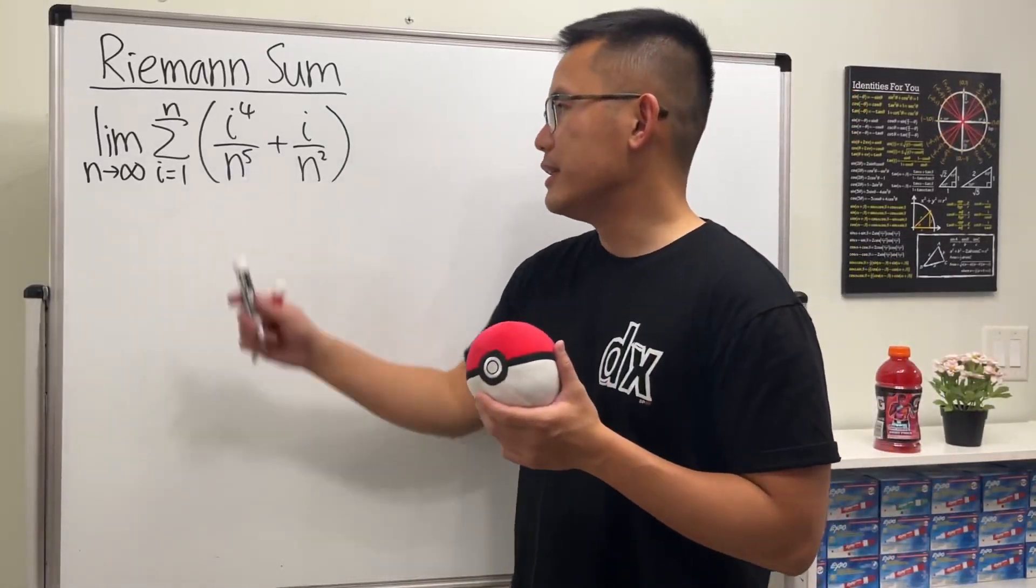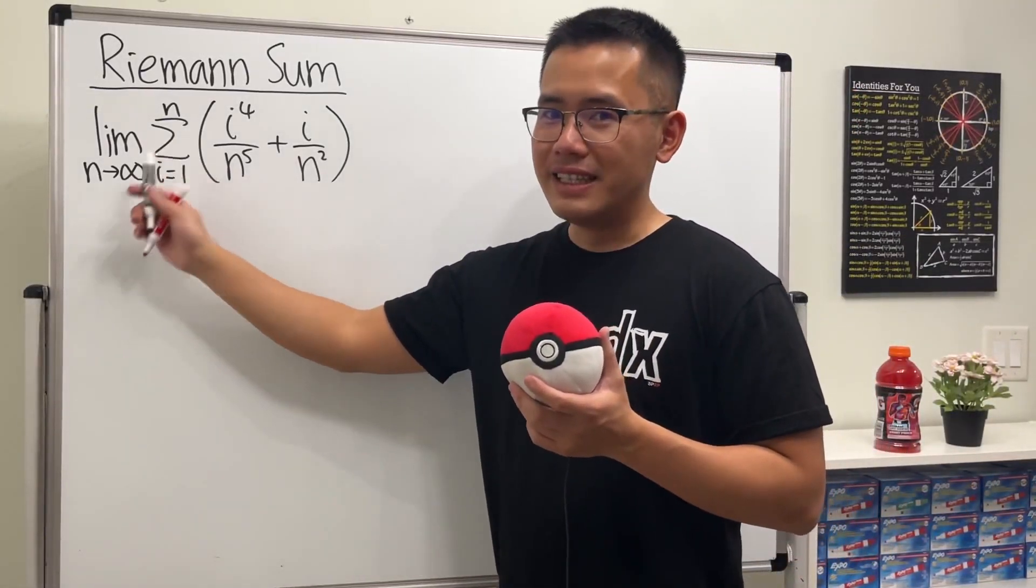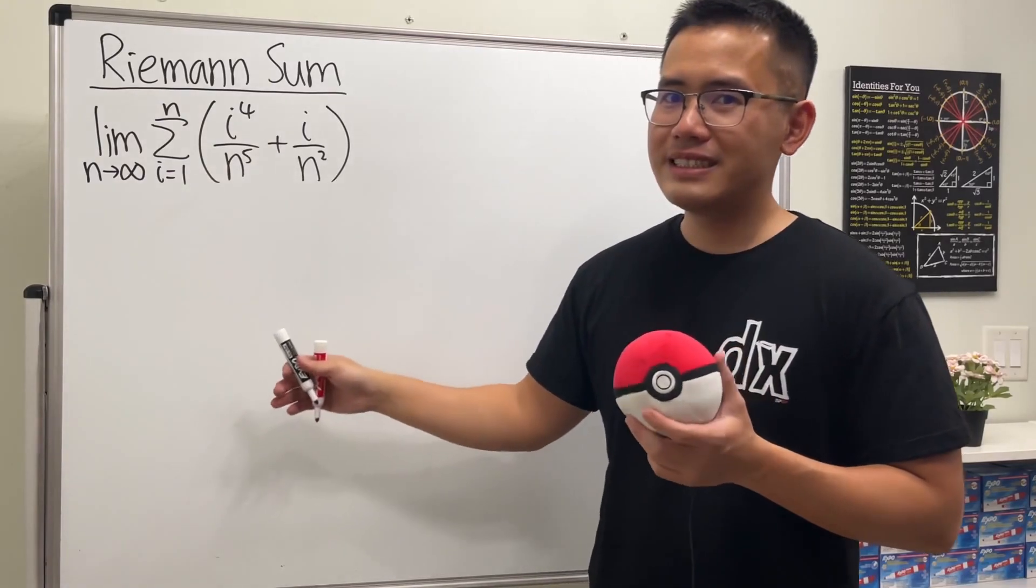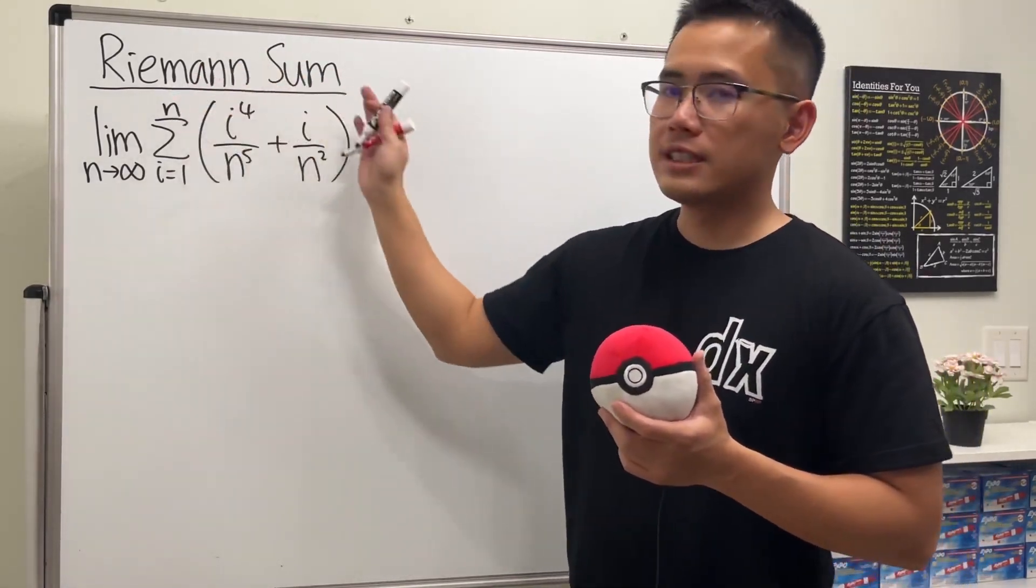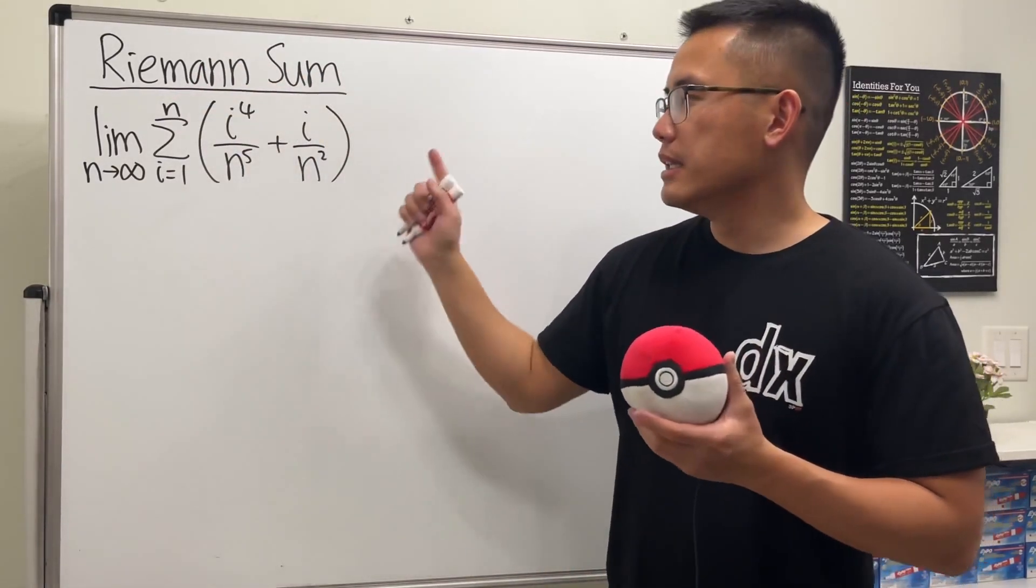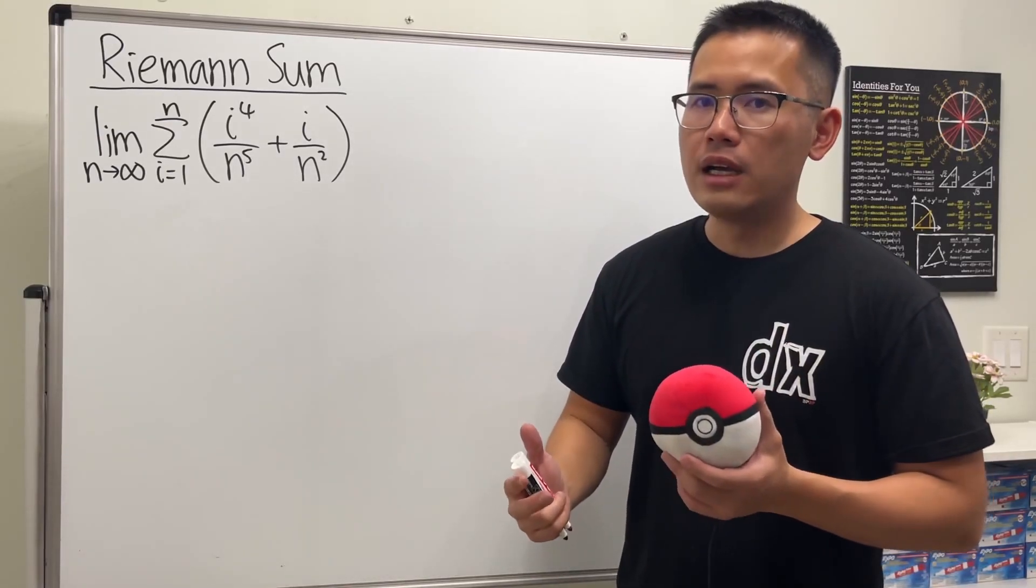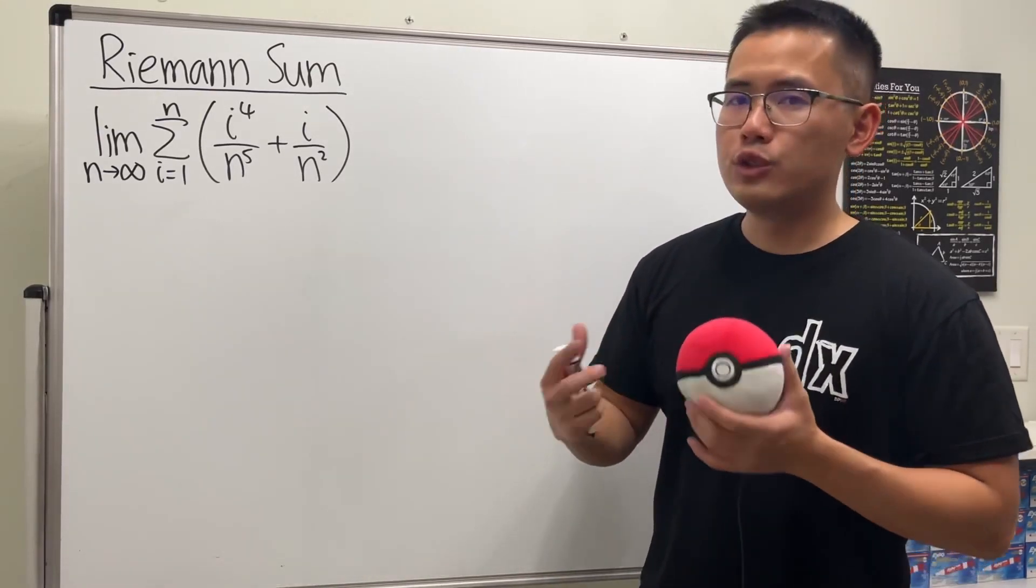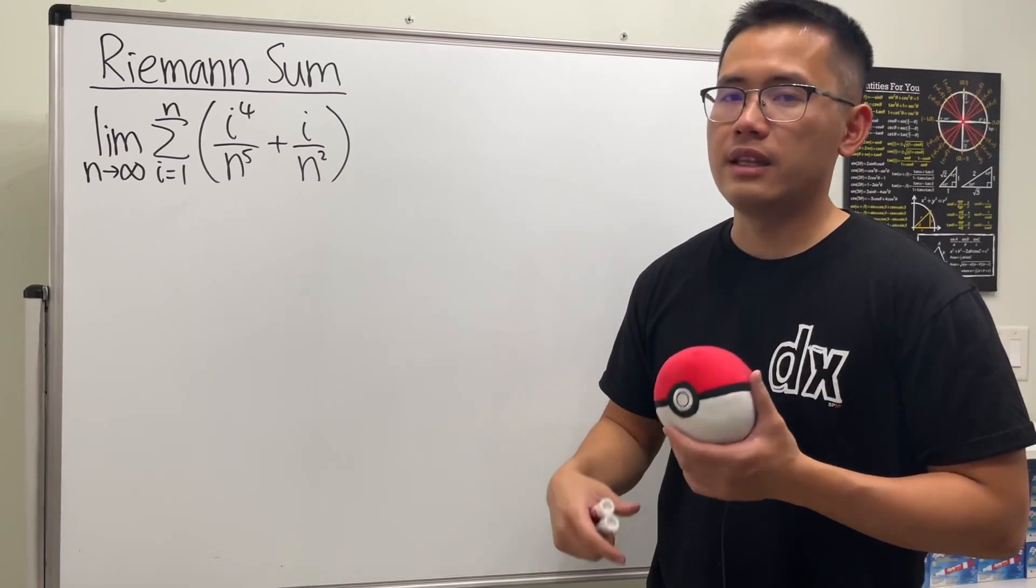Here we are going to evaluate this limit, and as we can see, this is the limit of a summation. Yes, this is an example of a Riemann sum, so the idea is that this represents an area. So we will just have to figure out what that region is, and then we can integrate it and find the answer.